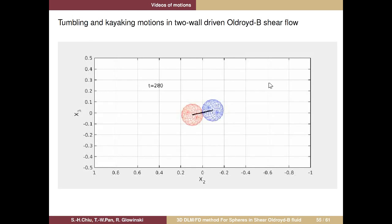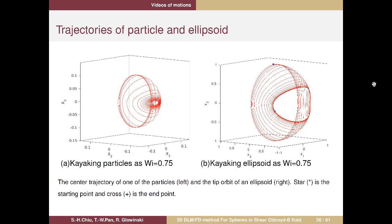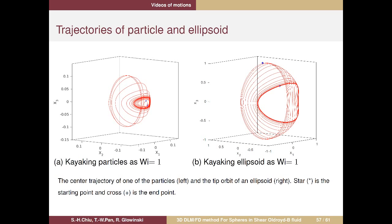We compare the kayaking motion with the Jeffery orbit of an ellipsoid. The trajectory of the two-particle center of mass and the tip orbit of the ellipsoid look very similar. In some sense and under some circumstances, the two chained particles can act loosely like an elongated rigid body, even though they are not really attached.